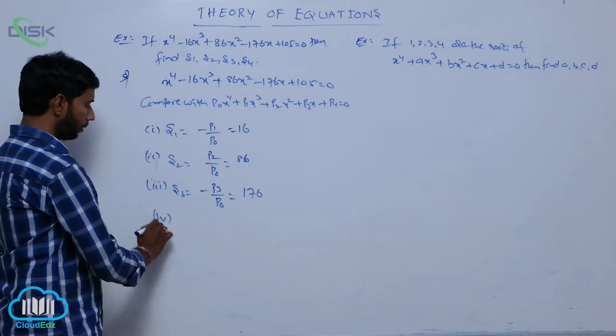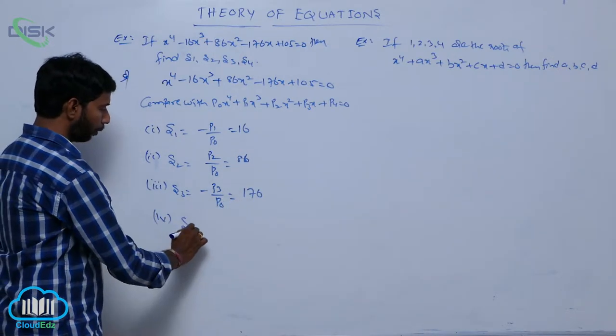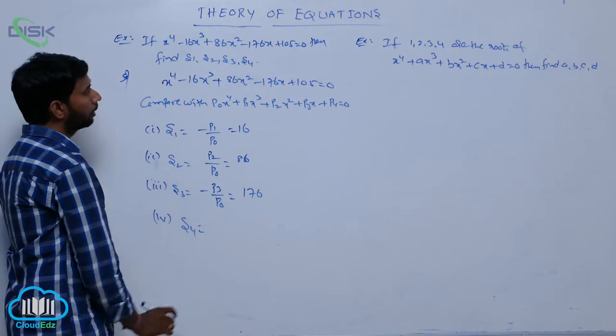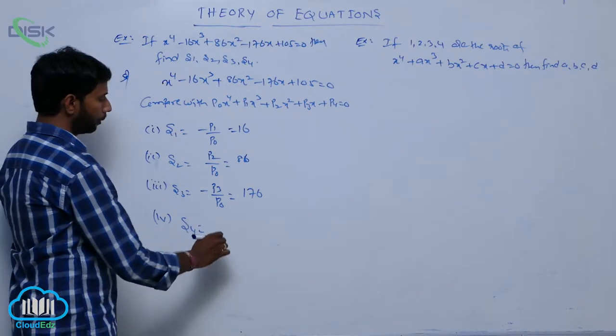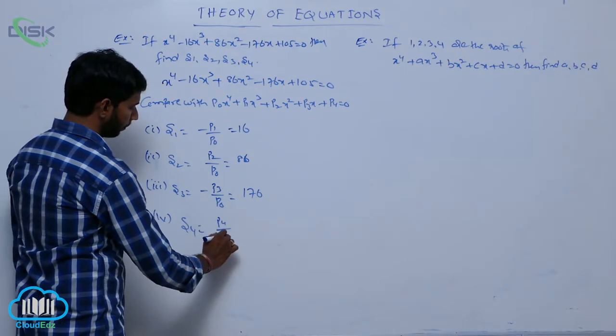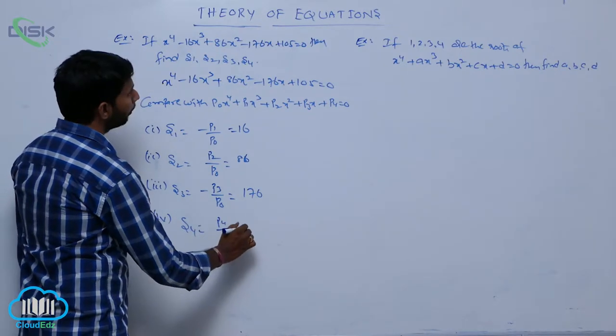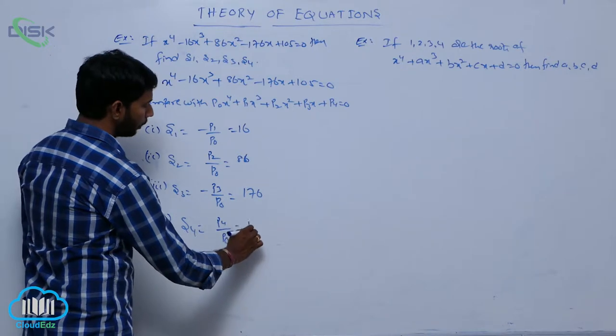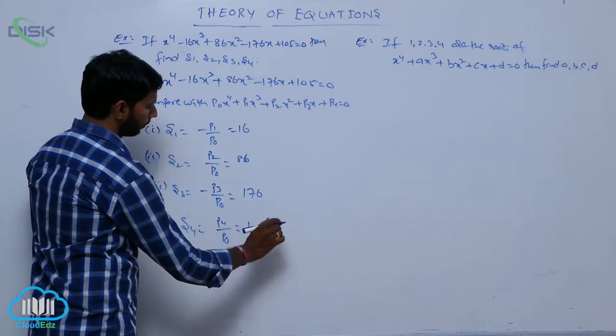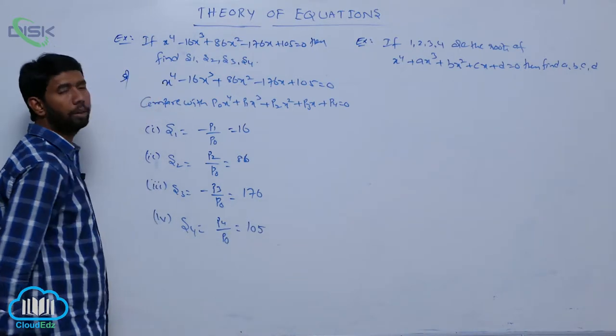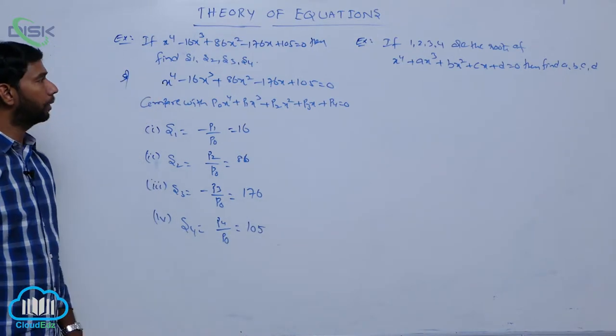And s4 is the product of all 4 roots, which equals p4 by p0. Here p4 equals 105, and p0 equals 1, so s4 equals 105.